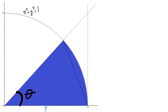We move to the area of the blue sector. The area of a sector from a circle is 1 half times the radius of the circle times the angle of the sector. The radius of our circle is 1. Therefore, the area of the blue sector is 1 half times theta.